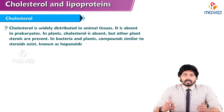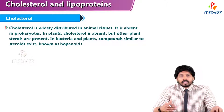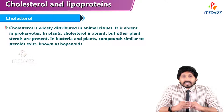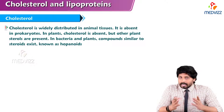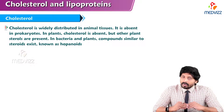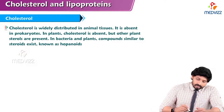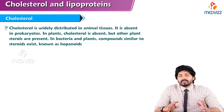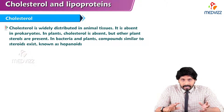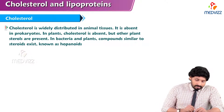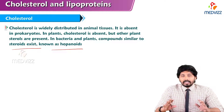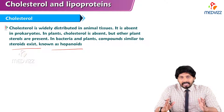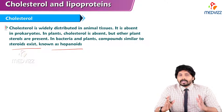Before going into the cholesterol metabolism, we will see the basic details regarding the cholesterol. What is cholesterol? Cholesterol is a steroid alcohol that is present exclusively in animal tissues. It is widely distributed in animal tissues. It is absent in prokaryotes. In plants, cholesterol is absent, but other plant sterols related to cholesterol are present. The main thing to remember: cholesterol is present exclusively in eukaryotes such as animal tissues, but not in prokaryotes.